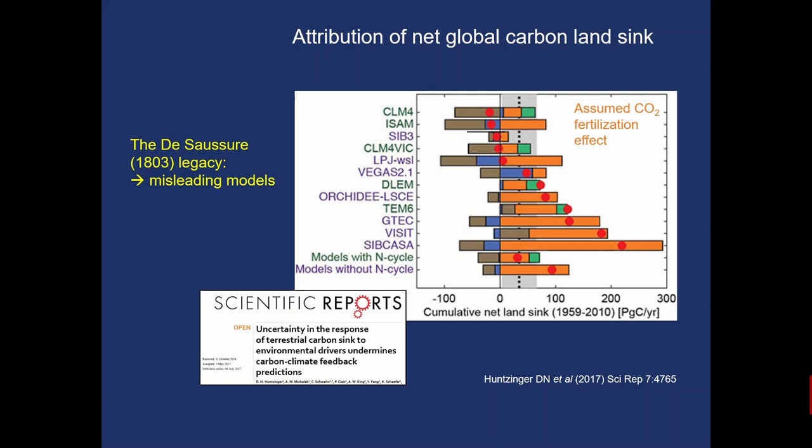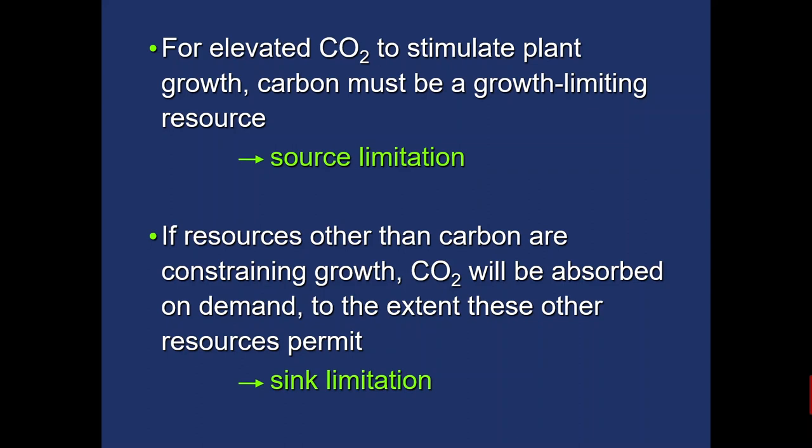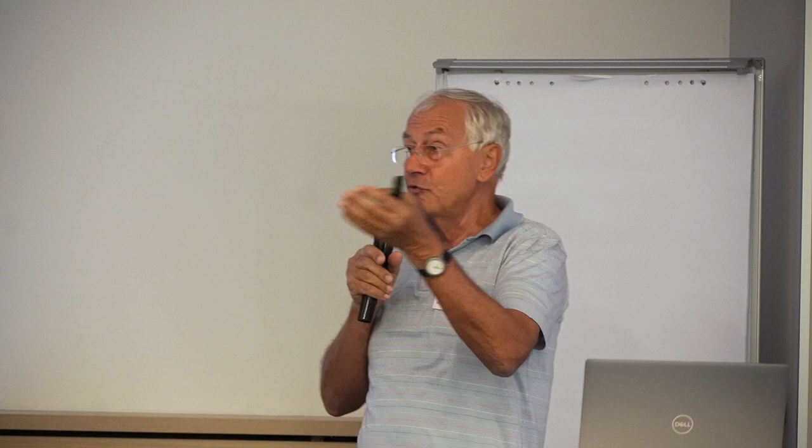I recommend the Huntsinger et al. 2017 paper in Scientific Reports — a product of the modeling community itself, which found models are wrong by an order of magnitude when trying to hindcast a CO2 fertilization effect at the global scale. To summarize: for elevated atmospheric CO2 to stimulate plant growth, carbon must be a growth-limiting resource. However, if resources other than carbon are constraining growth, CO2 will be absorbed on demand only to the extent these other resources permit. This is a sink-limitation-based concept.